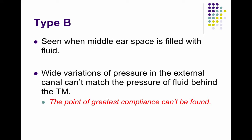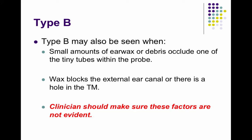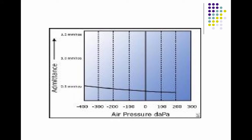A type B is a flat tympanogram, seen when the middle ear space is filled with fluid. The wide variations of pressure in the external ear canal can't match the pressure in the fluid, so you can't find the greatest point of compliance with a type B. Type B can also be seen when ear wax or debris is occluding one of the probes — in that case the ear canal volume would show 0.3 or less. If the ear canal volume is between 0.3 and 3.0, then nothing is blocking it and the flat curve is likely due to fluid in the middle ear.